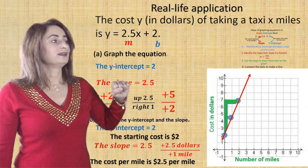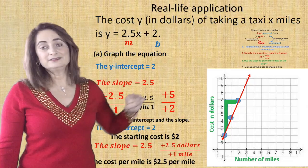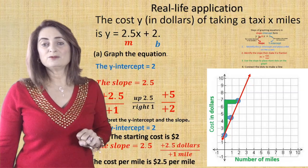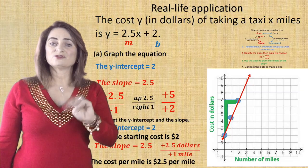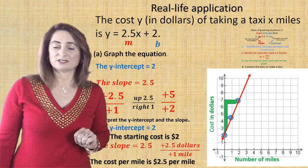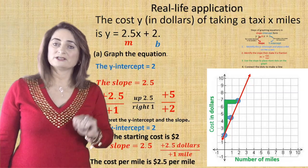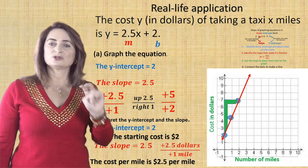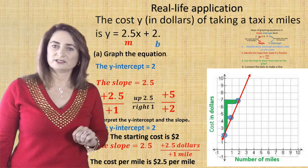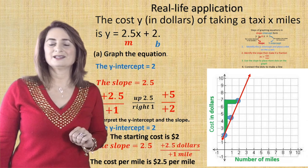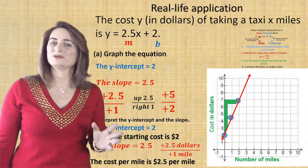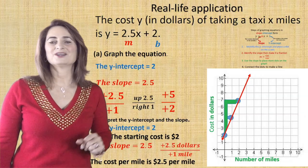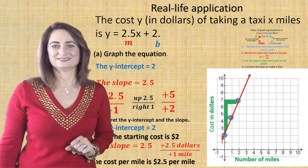To graph linear equations in slope-intercept form, use the four easy steps: know the y-intercept, know the slope, use the slope to draw different dots, then connect them to make a line. That's it for today's lesson — you guys have a great day!